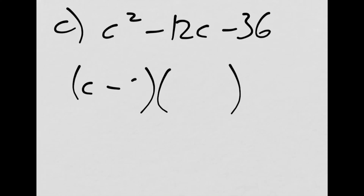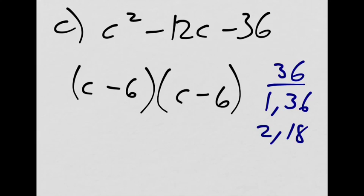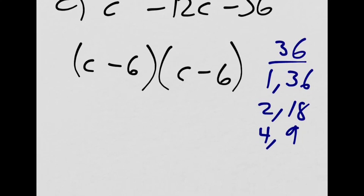C squared minus 12c minus 36. It should be a c, not an x. Back to what we had before. We had c minus 6, c minus 6. And the problem that we found here was when we go negative 6 times negative 6, we get positive 36. Ah! So can I change these numbers to somehow make them equal negative 12? What are the possibilities do I have? I've got 1 and 36. I've got 2 and 18. I've got 4 and 9. I forgot 3 and 12. Is anything going to work here?